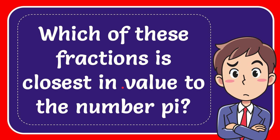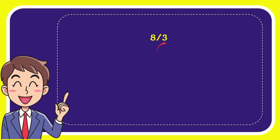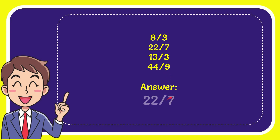In this video I'm going to give you the answer to this question: which of these fractions is closest in value to the number pi? Here are the options: the first option is 8 over 3, the second option is 22 over 7, the third option is 13 over 3, and the last option is 44 over 9. The correct answer is 22 over 7.